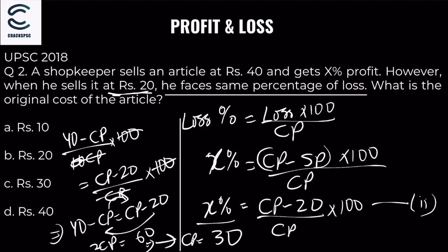So the cost price is 30 rupees. Simple! Both equations balance out neatly to give us CP = 30.